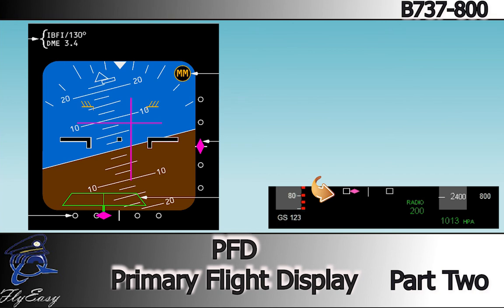An expanded localizer scale is displayed when the Autopilot or Flight Director is in the localizer mode and the airplane is close to the runway centerline. In this situation, a deflection equal to one rectangle equals one-half dot deviation.